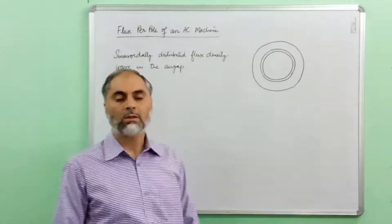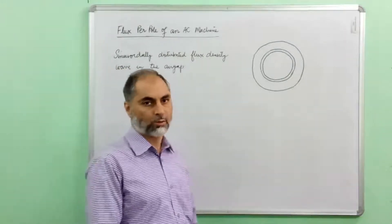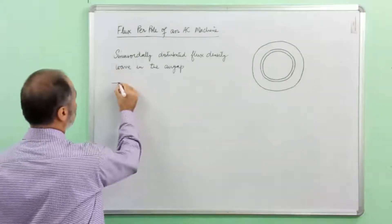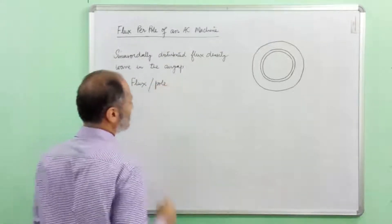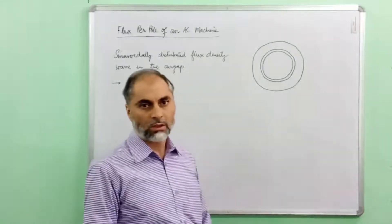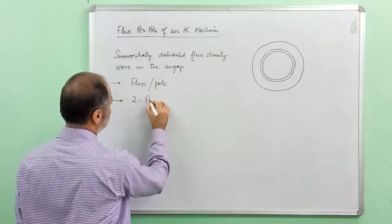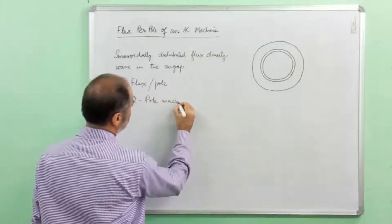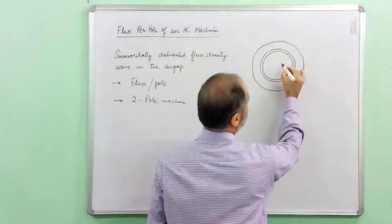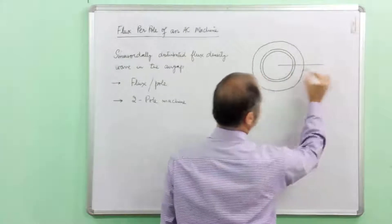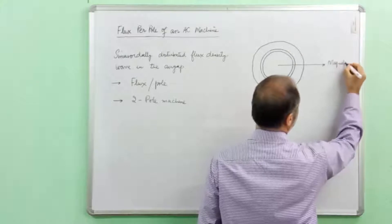The aim here is to determine the flux per pole of such a magnetic flux distribution. We need to determine flux per pole. For that matter, let us initially consider for simplicity a two-pole machine, and suppose the axis of the field is along this line — this is the magnetic axis.